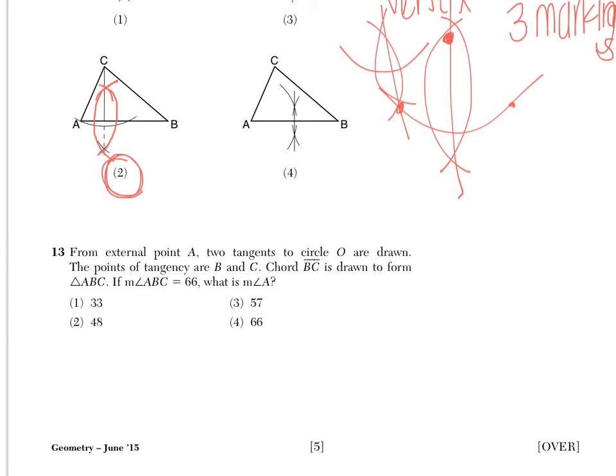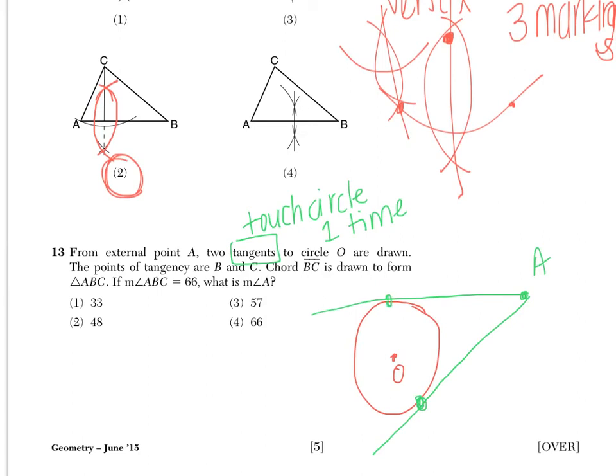Number 13 says, from external point A, two tangents to circle O are drawn. So I'm going to sketch this circle. We have circle O, which means the center is O. Two tangents are drawn to the circle. And so tangents touch the circle one time. From an external point, say A. Alright, so I'm touching once here, touching once here. The point of tangency are B and C. Chord BC is drawn to form triangle ABC.